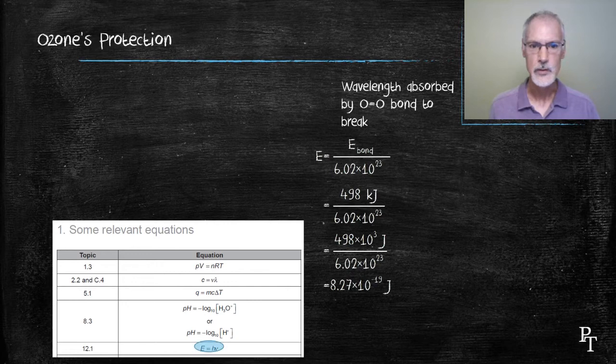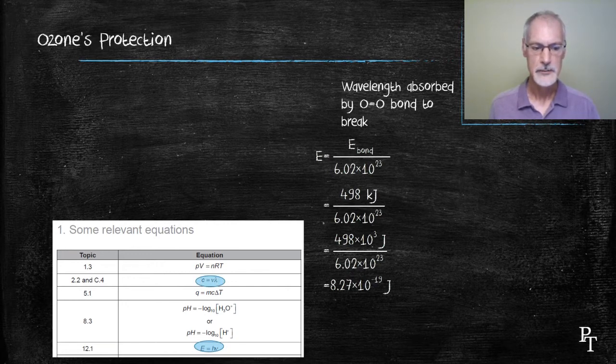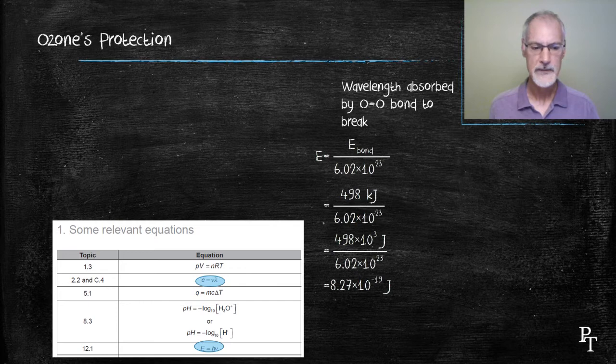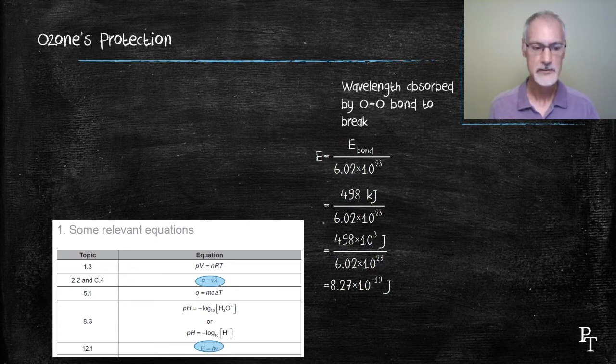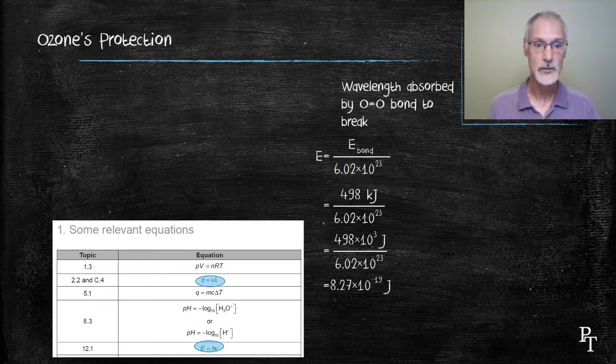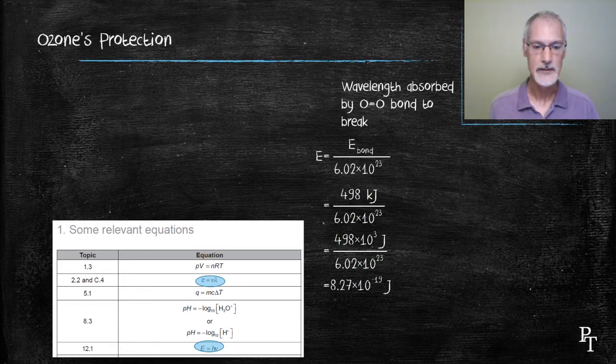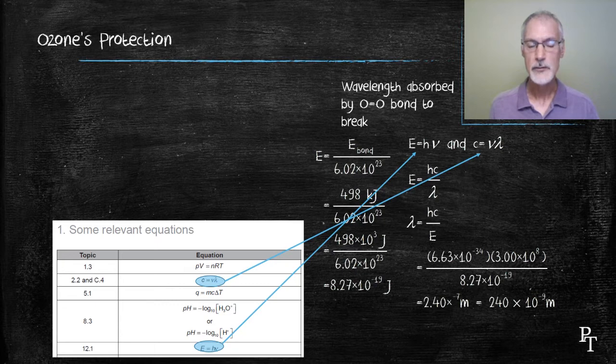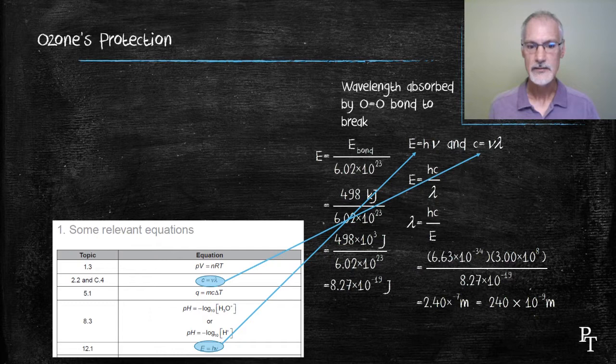Now I want to take a look at the energy in that bond and connect it to the concept of wavelength. What wavelength or color of light would be needed to break that bond? To do that, I'm going to look at some equations that are present in our IB data book. At the bottom, in chapter 12.1, there's a relationship between energy, H, which is Planck's constant, a value that never changes, and the frequency of the light. Frequency is that symbol that looks like a V. There's also a relationship between the speed of a wave, C, equals its frequency times its wavelength. So I'm going to combine these two equations. I'm going to replace the frequency with C and the wavelength, and it gives me the second expression that you see.